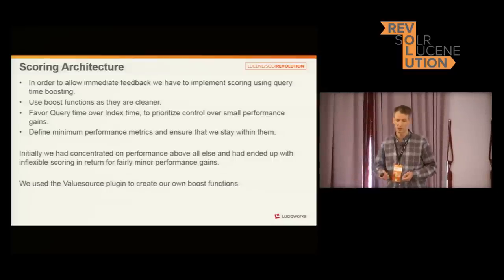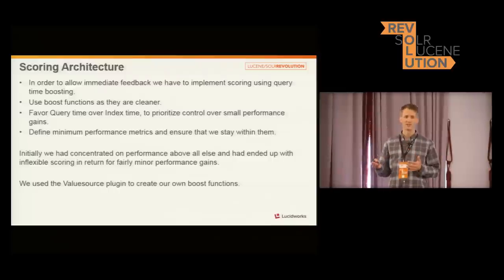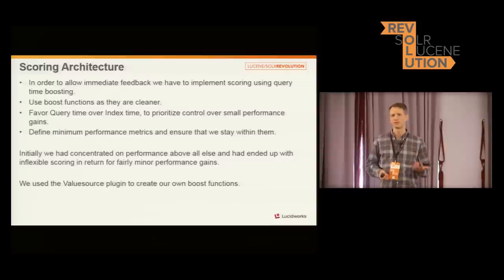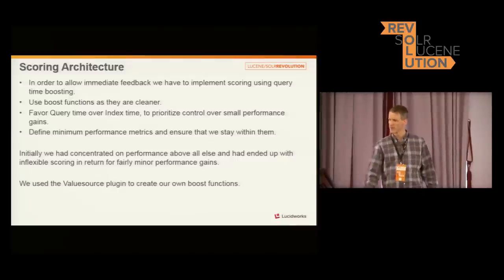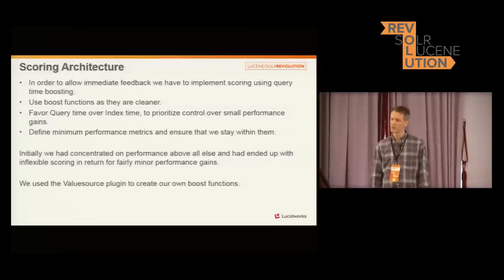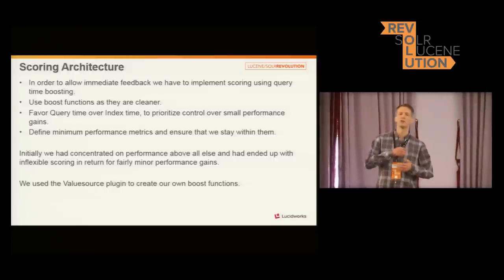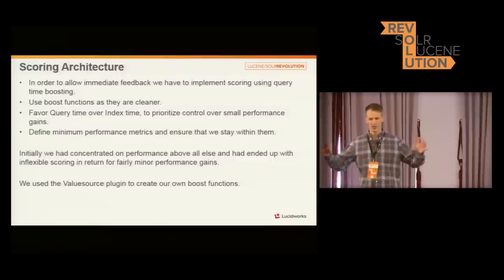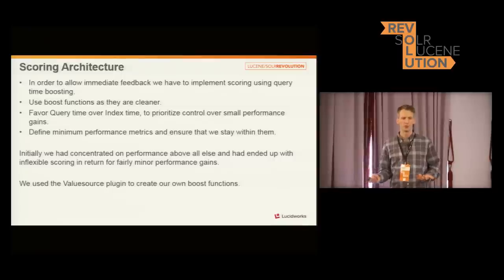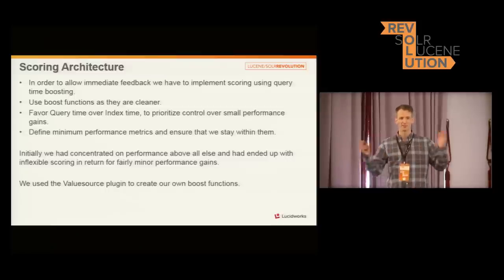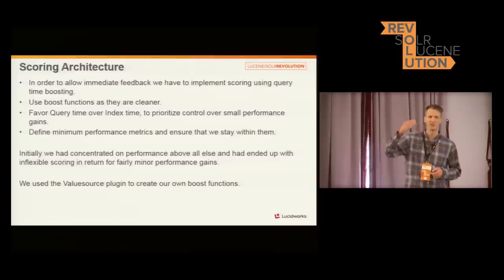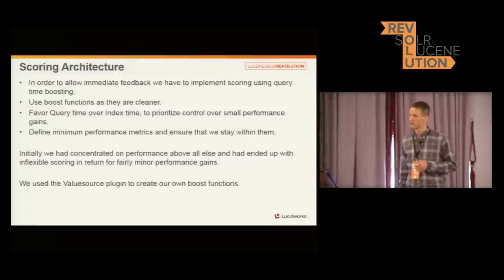We're helped partly by our use case. It's rare for our searches to return more than a million assets for one query, and split across five shards that's just 200,000 documents to score per query — which isn't particularly much work to do. We used the value source plugin to create our own boost functions. Doing everything through the existing boost functions worked, but the URL strings kept growing and growing. This is an enterprise tool, so we have to worry about people supporting it in five years — massive strings are difficult to test and understand. Whereas a Java class that lays out everything it's doing and has unit tests is much more sustainable.